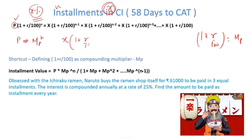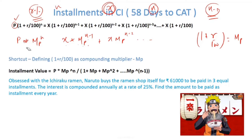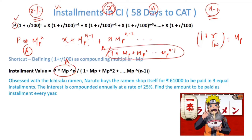The first installment x gives the recipient x × (multiplier)^(n−1), because they can only invest for n−1 years. The second installment grows as x × (multiplier)^(n−2), and so on. Setting the sum equal to the amount P × (multiplier)^n, the installment value is: x = Amount / (1 + multiplier + multiplier^2 + … + multiplier^(n−1)). The denominator is a geometric progression, so use the GP sum formula.